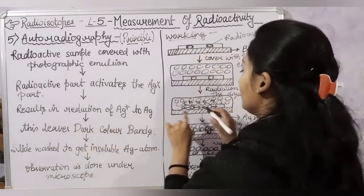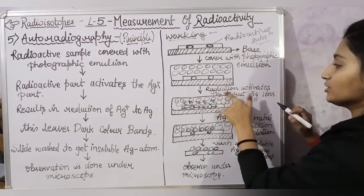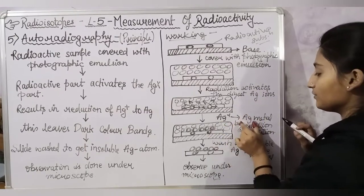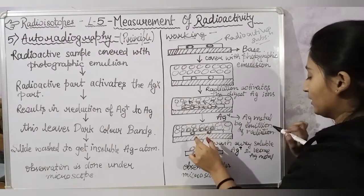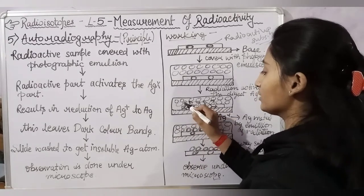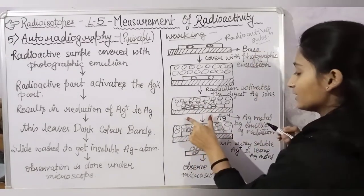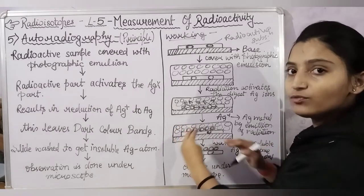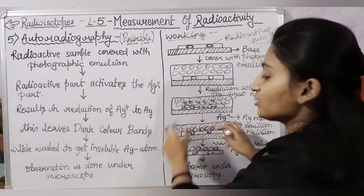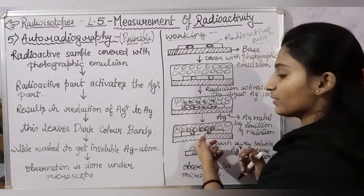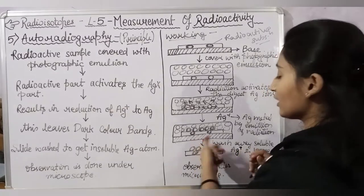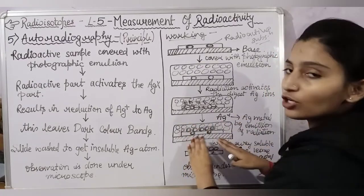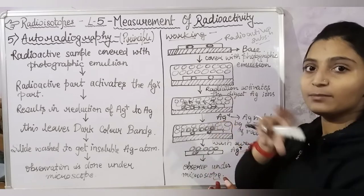The radiation will be emitted and will activate and reduce AgX, converting it to silver metal. This arrow shows that radiation is emitted. Where the radiation is emitted, it will make dark bands. The silver halides become insoluble silver metal atoms. We will wash the entire slide, and the insoluble elements will be obtained and observed under the microscope.